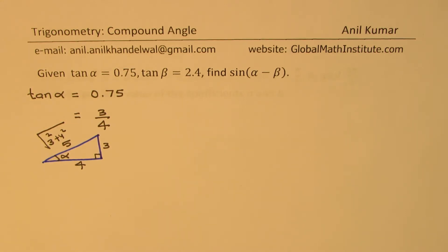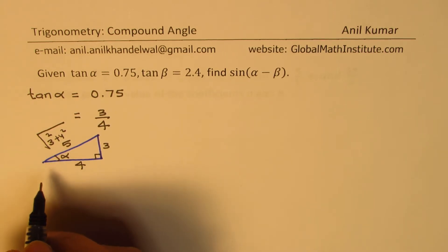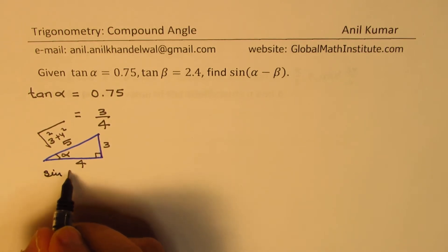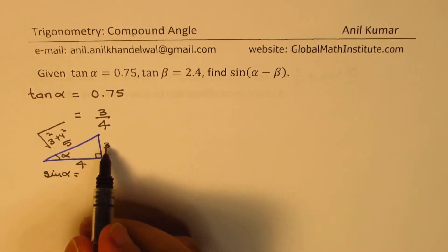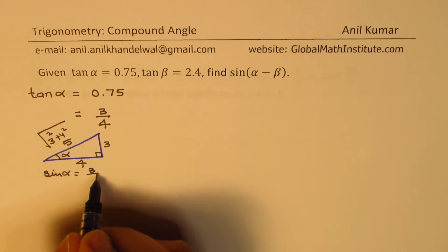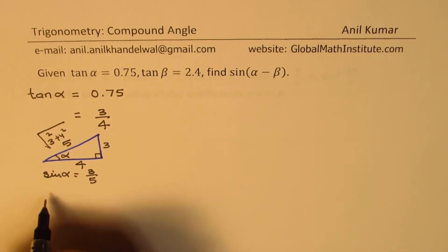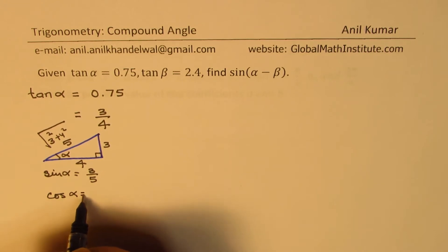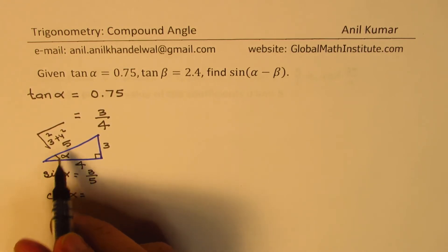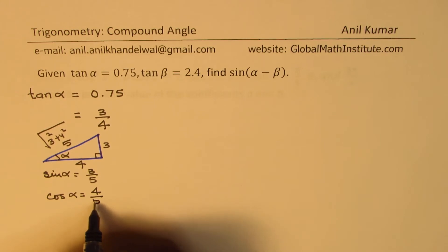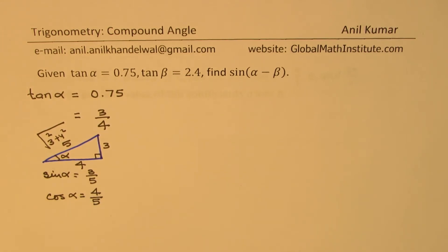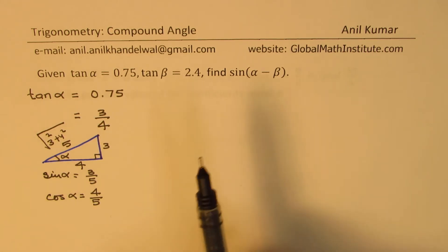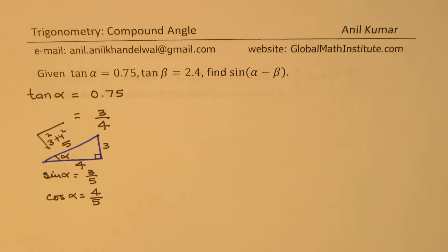Now, as soon as you get your right triangle, you can find what sin α and cos α are. So we can say sin α, which is the ratio of opposite to hypotenuse, should be 3 over 5. And cos α, which is the ratio of adjacent over hypotenuse, should be 4 over 5. So we get sin α and cos α from tan α. Now you can understand the strategy to find the value of sin(α - β).